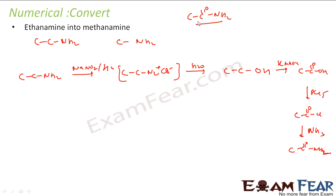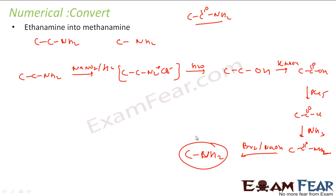Once I have CONH2, I do the Hofmann reaction — CO will be eliminated and what I get is CH3NH2, which is methaneamine. That is exactly what I was looking for.